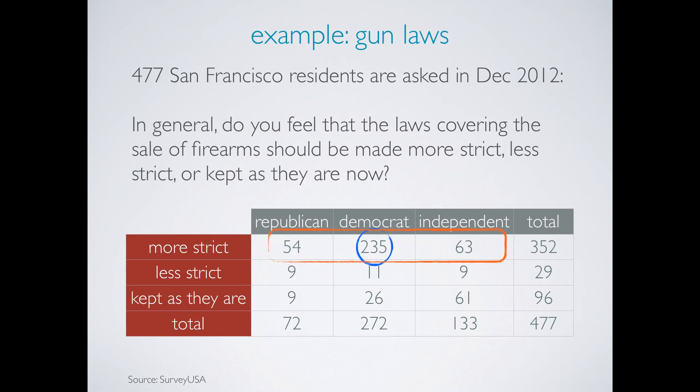It appears that more Democrats than any other group want more strict gun laws. However, we should note that more Democrats than others were surveyed, so we can't simply compare the raw counts in these cells to evaluate the relationship between these two variables.